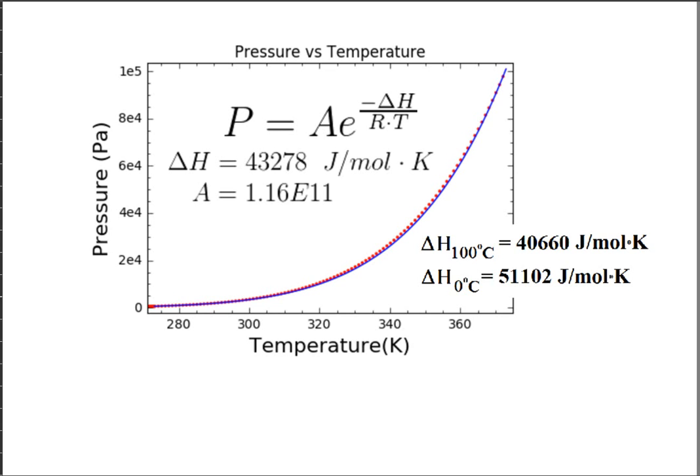In order to get a best fit, I had to use quite a compromise of 43,278. What probably needs to be done is to go back and integrate the equation considering delta H as a function of temperature, although that could lead to quite a messy result.